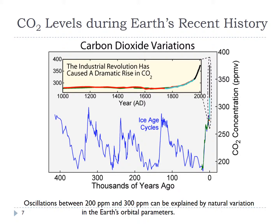As temperature decreases a little bit, more CO2 gets absorbed by the ocean, leaving less in the atmosphere and reducing greenhouse warming. More ice forms, reflecting more sunlight. These feedbacks mean a small change in Earth's tilt can cause major temperature changes, which also show up as changes in CO2 concentration. But over the last 400,000 years, CO2 concentration has not gone above 300 parts per million — whereas now it's up around 400. We're well outside the range of what we've seen in the last 400,000 years, and that is something to be concerned about.